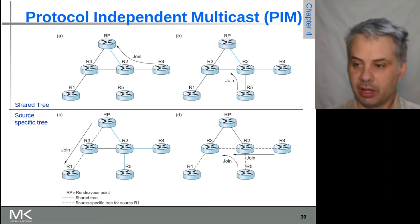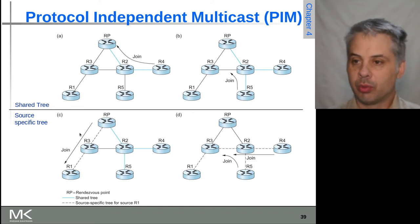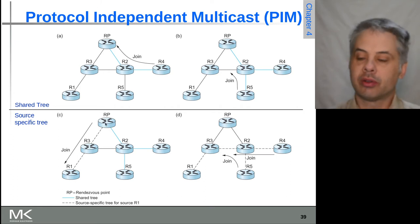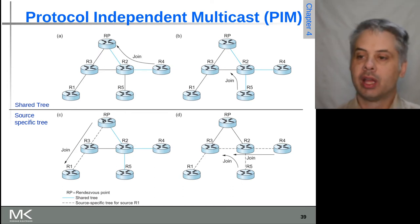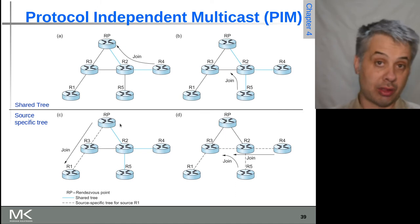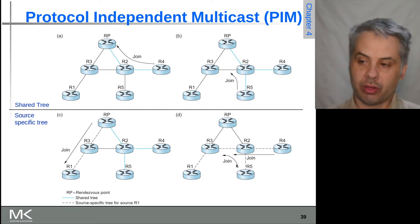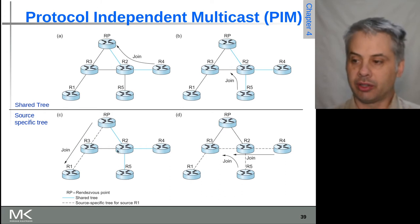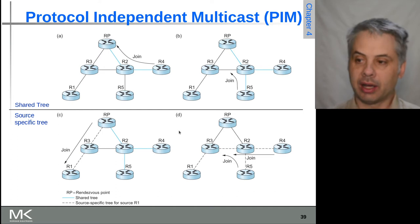That will eventually get back to the source router, which will then know there are nodes out on different paths to reach it. Initially the join goes up to the rendezvous point, but the RP will be able to tell router 3 that it actually has a better path to router 4. So the traffic won't flow through the rendezvous point — it really is just a coordination point, not for actually carrying the traffic. Router 5 joining will be added into the distribution tree by R2, so we end up with exactly the routers that need to be involved.